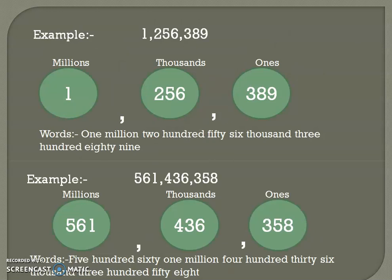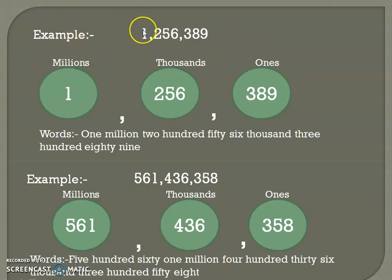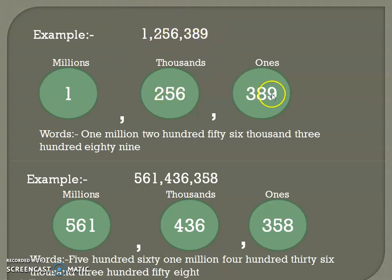If the number is nine digits or eight digits, you can draw three circles. This circle is for the ones period, this circle is for the thousands period, and this circle is for the millions period. What you do is write the first numbers in the millions period circle, the next three in the thousands period circle, and these three numbers in the ones period.